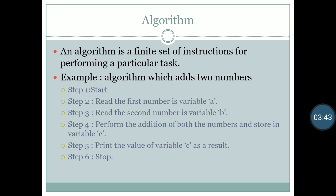The next topic is algorithm, which we have already studied in C programming language. The basic definition of algorithm is: an algorithm is a finite set of instructions for performing a particular task, or formally, an algorithm is a step-by-step solution of any problem. We have already discussed an example of algorithm in the first semester — a process of tea making. If we don't know how to make tea, that is a problem for us.